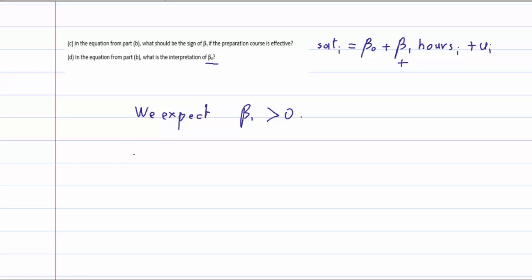So the value of beta zero is the expectation of the SAT score when we know that hours equals zero. And that is because the expectation of U is also zero. So this interpretation is important: we have the number or the average SAT score when we have no preparation, and then we expect this score to rise as hours increase.